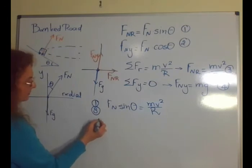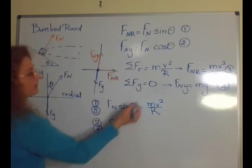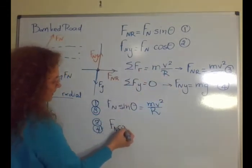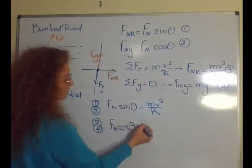And from the other two equations, I can find that the y component, which is fN cosine theta equals mg.